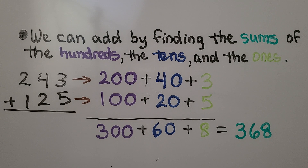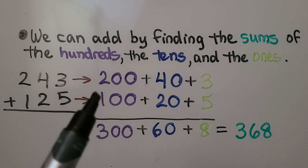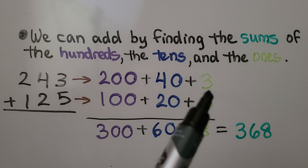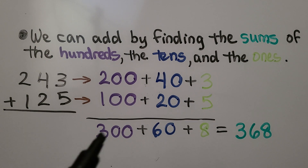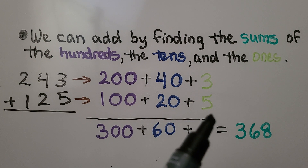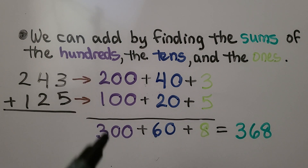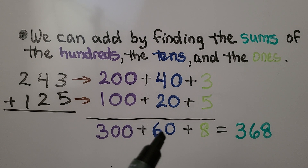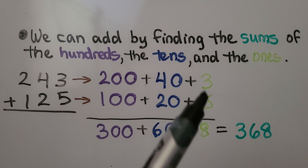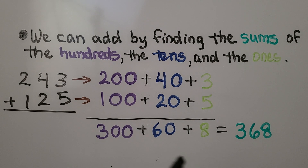We can add by finding the sums of the hundreds, the tens, and the ones. We write each addend as the sum of the value of its digits. 243 is 200 plus 40 plus 3. 125 is 100 plus 20 plus 5. We add the hundreds — that's 300. We add the tens — that's 60. We add the ones — that's 8. We have 368 for our sum.